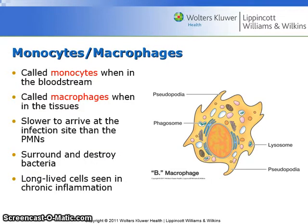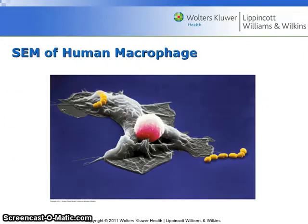Monocytes or macrophages are called monocytes when they are found in the bloodstream and they are called macrophages when they are found in the tissue. They are slower to arrive at the infection site than the PMNs. Their function is to surround and destroy the bacteria. They are the long-lived cells seen in chronic inflammation. Here is a scanning electron micrograph of a human macrophage.